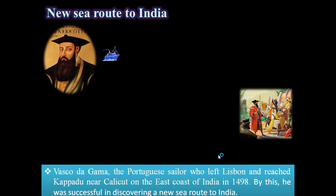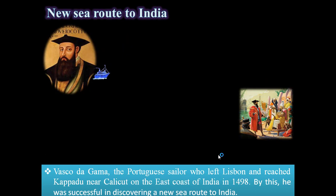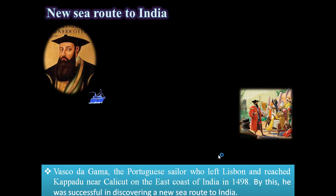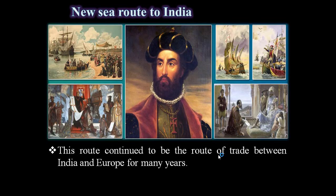Finally, the dream of finding new sea routes to India came into existence with the help of Portuguese sailor Vasco da Gama, who left Lisbon and reached Kappadu near Calicut on the east coast of India in 1498. He was successful in discovering a new sea route to India, and this route continued to be the route of trade between India and Europe for many years.